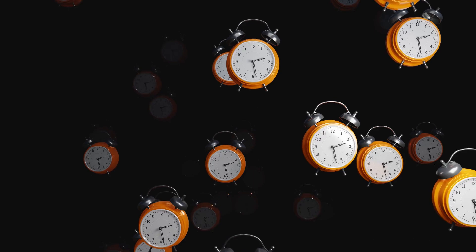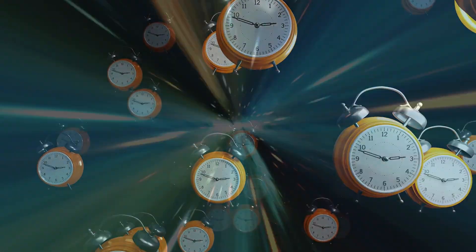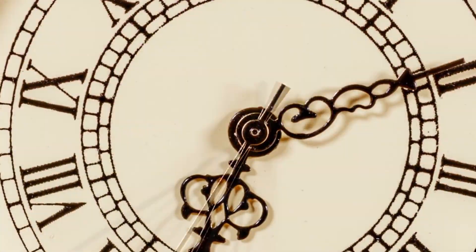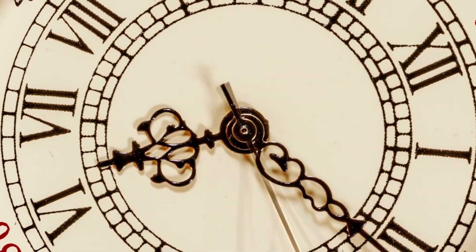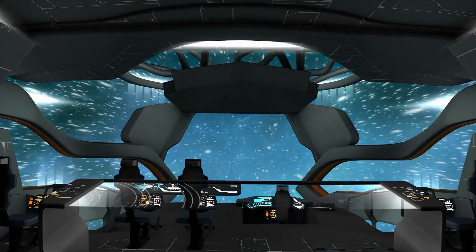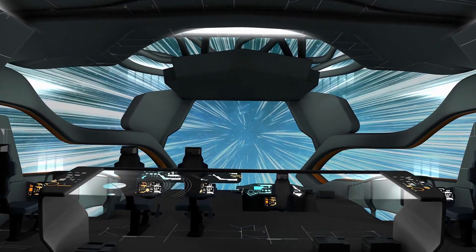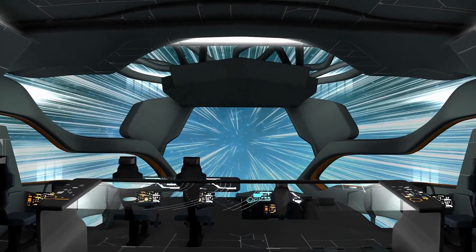Secondly, as an object approaches the speed of light, time slows down for it relative to an observer who is not moving at that speed. This is known as time dilation. At the speed of light, time would come to a complete stop, and the object would essentially exist in a timeless state. This means that it would be impossible for the object to travel faster than the speed of light, as it would require time to pass.